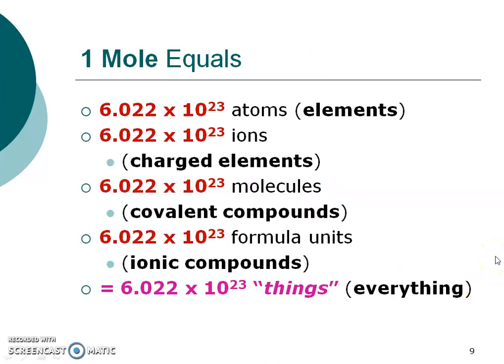So one mole equals Avogadro's number of those atoms, ions, molecules, or formula units. This applies to anything — if I want a mole of pencils, I would need 6.022 times 10 to the 23rd of those pencils. Just like if I say I need a dozen eggs, that would be 12. So if I need a mole of people, I would need 6.022 times 10 to the 23rd people. Avogadro's number represents many things, and we need to understand that we're going to be talking about atoms, ions, molecules, and formula units.